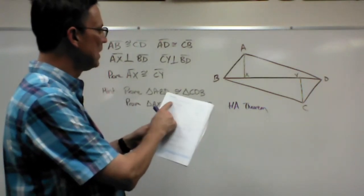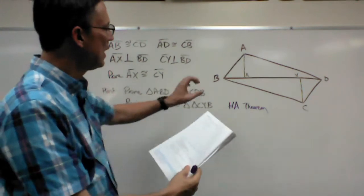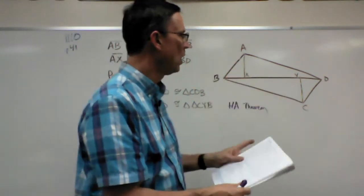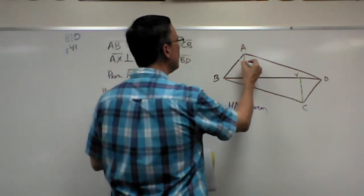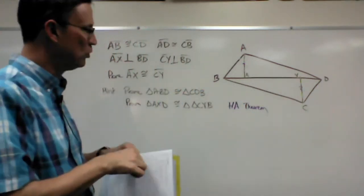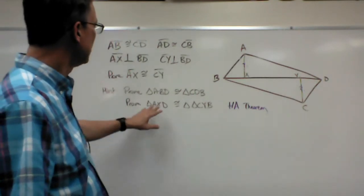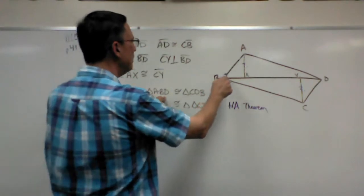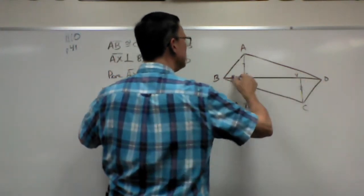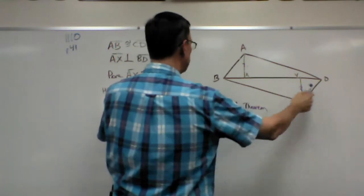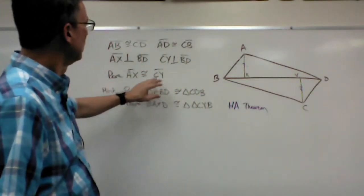There's a lot that's given. They want us to prove that AX is congruent to CY. So I want to put a question mark over those two. Somehow I've got to get to proving those two are congruent. They gave me a clue here though. They say first I want to prove that ABD, which is this big triangle up here, is congruent to this big triangle.